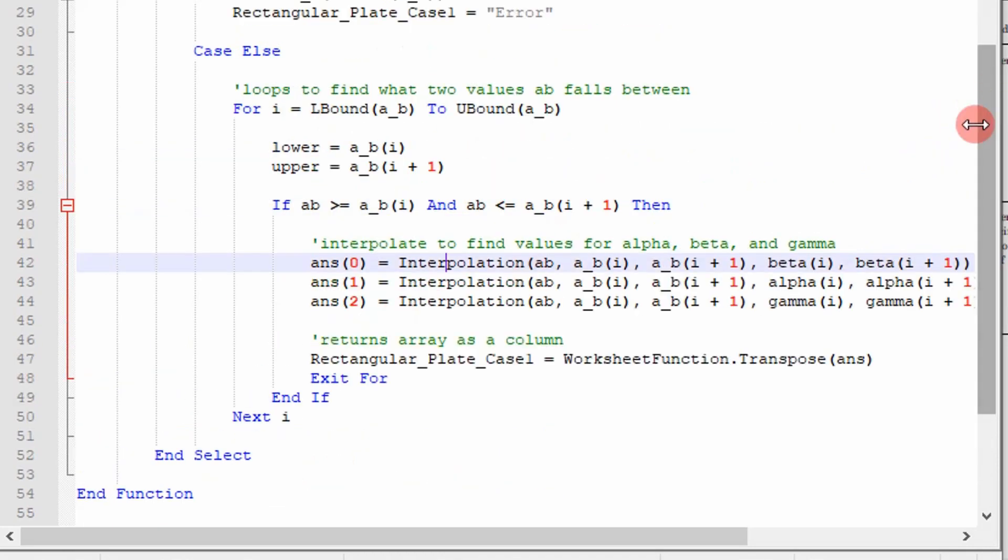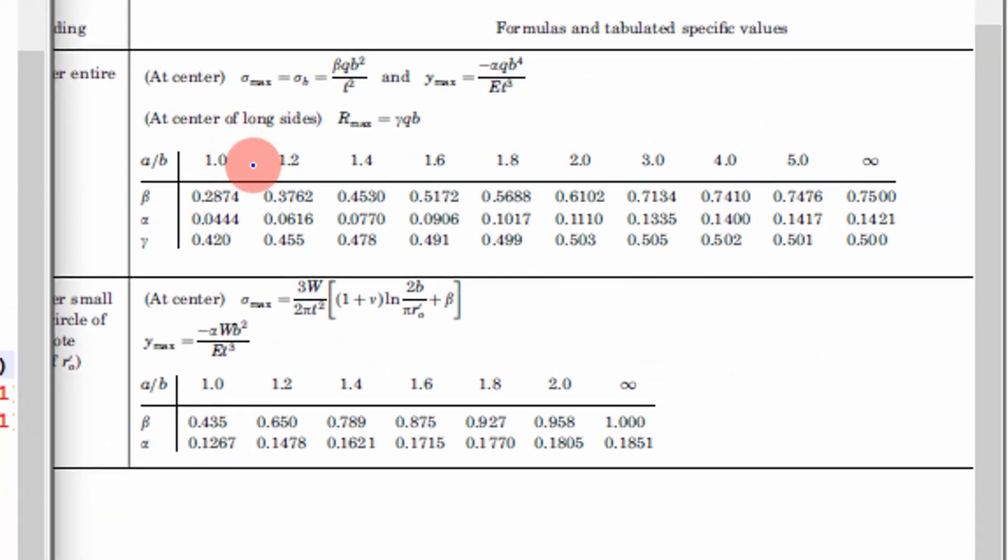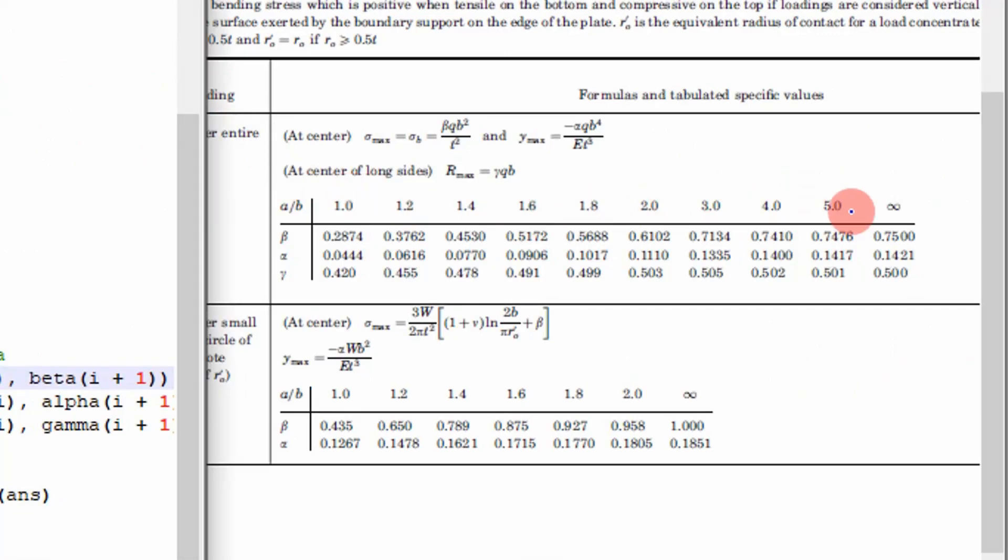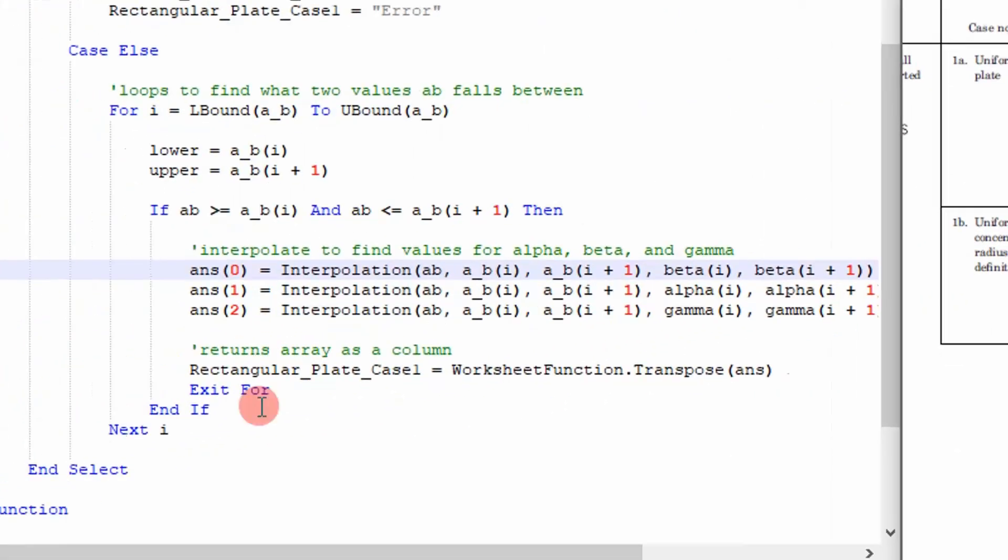And so essentially what I'm doing, this loop, just to reiterate, I'm going through and I'm saying, okay, if a over b is between 1 and 1.2, then linearly interpolate it. If it's not, then go to the next index. So we'll go from 1.2 to 1.4, check it. If it's not there, go from 1.4 to 1.6, check. And that's what this for loop is doing right there. It's going through each of these and checking to see if my a divided by b is between those. If it is, then it'll go through and interpolate or find those values for beta, alpha, and gamma. So that's how that works.